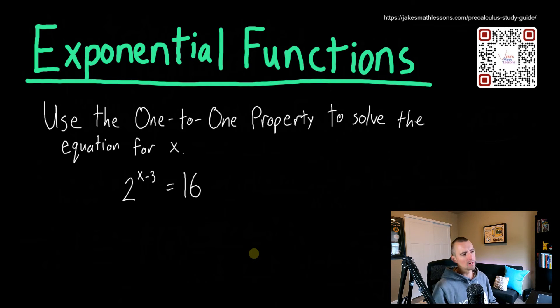But let's go ahead and jump into the content here. So I want to talk a bit today about the one-to-one property and how to use it to solve some sort of equation like this: 2 to the x minus 3 equals 16.